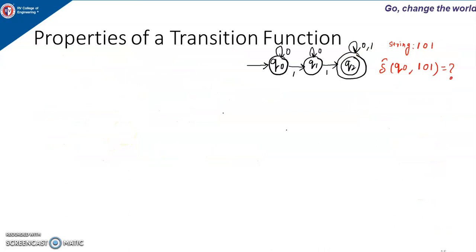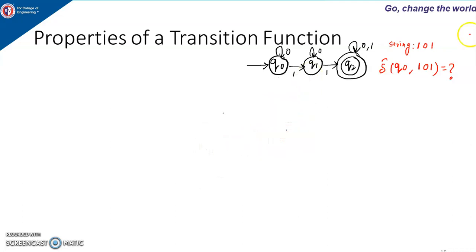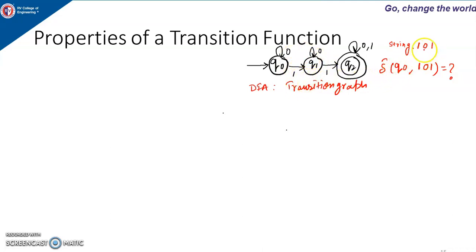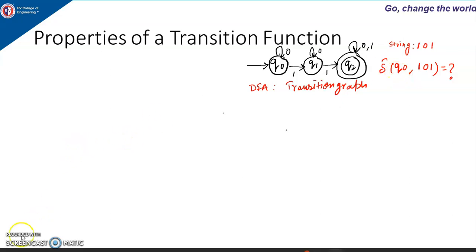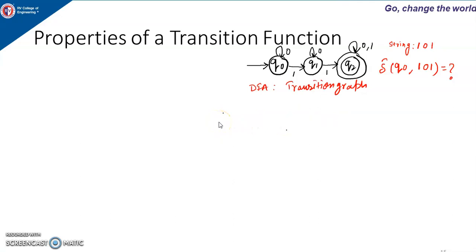Now let us take one example of how the extended transition function works. Here a DFA is given as a transition graph, and we need to check whether the string 101 is accepted by this machine or not. The start state of the machine will be the first parameter of the extended transition function, and the string will be the second parameter of the extended transition function.